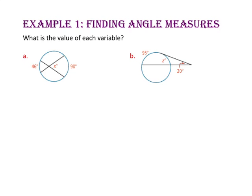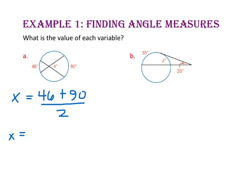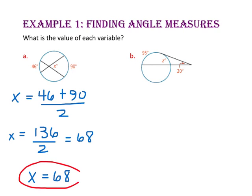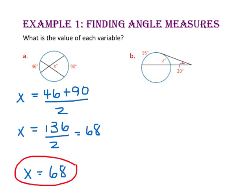In example 1, we will find angle measures. What is the value of each variable? In part A, we have two chords that intersect inside the circle, so the value of x will be the sum of the two intercepted arcs divided by 2. 46 plus 90 is 136, and divided by 2 is 68. So x equals 68.